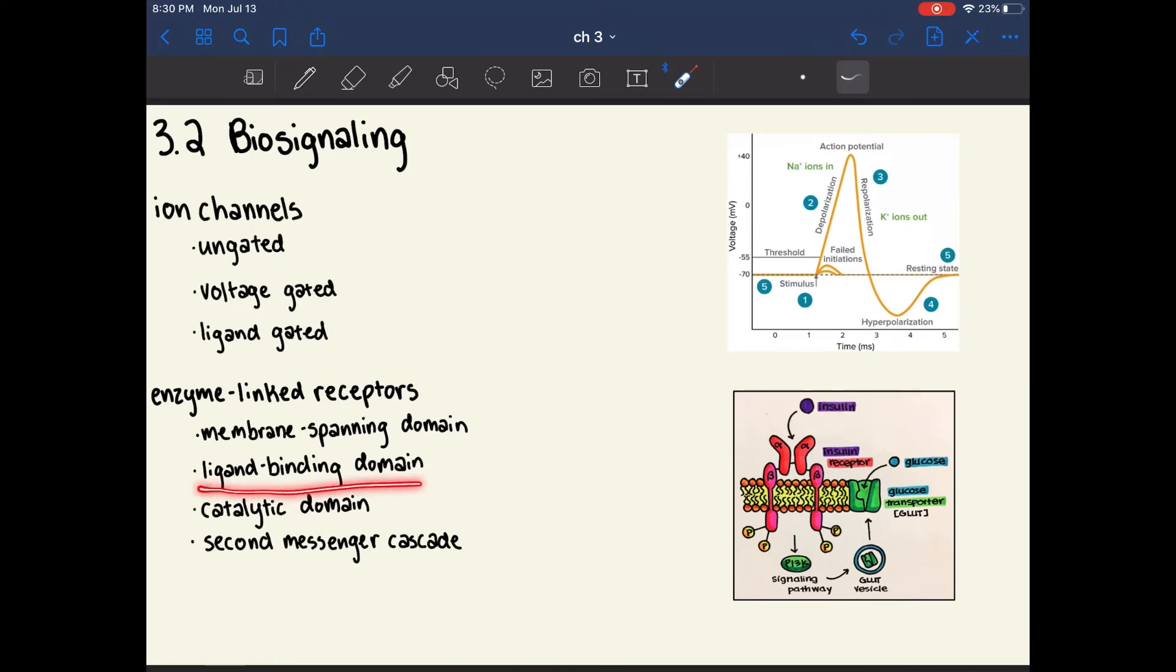The second is the ligand-binding domain. The ligand-binding domain is on the outside of the cell, and in this picture, it binds insulin. So insulin is the ligand. When the ligand binds to the ligand-binding domain, a conformational change occurs in the protein, and then the catalytic domain is able to do its job. Many times, the catalytic domain will activate a second messenger cascade.